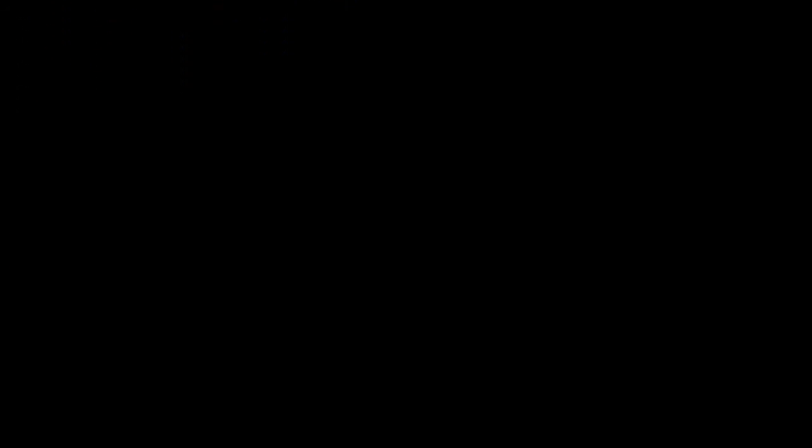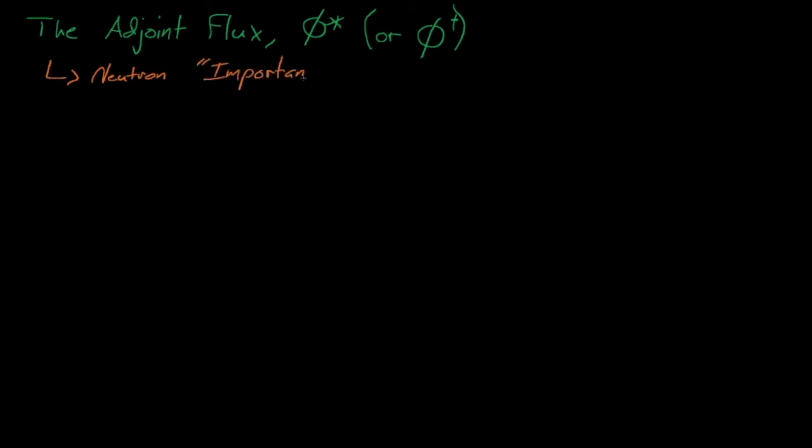Now let's dive into the adjoint flux and the adjoint Boltzmann transport equation. The adjoint is often a difficult concept to understand for most people, and it's really something that we don't discuss at all in undergraduate nuclear engineering curriculum, but it's actually one of my favorite mathematical concepts in all of nuclear engineering. We care about the adjoint because, and as we'll see soon, it is used to more accurately calculate kinetics parameters, and it is also a key part of the perturbation equations which we will discuss soon.